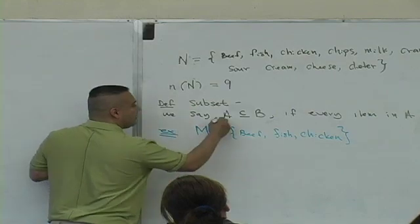This is an example. Which one's the subset? Is M the subset or is N the subset? We say A is a subset of B if every item in A is also in this list here. So this is an example of M being a subset of N.